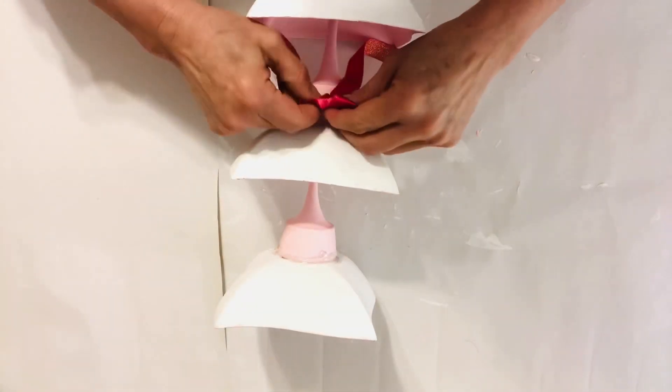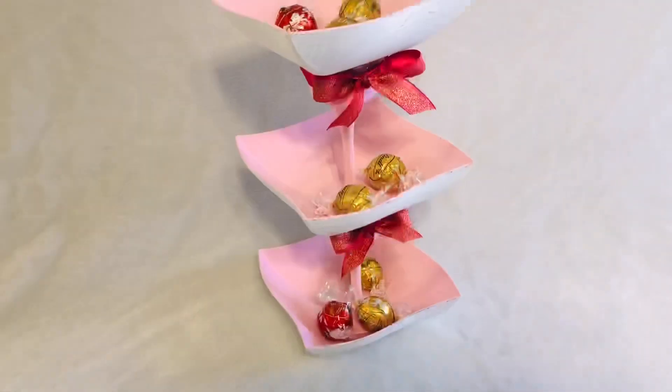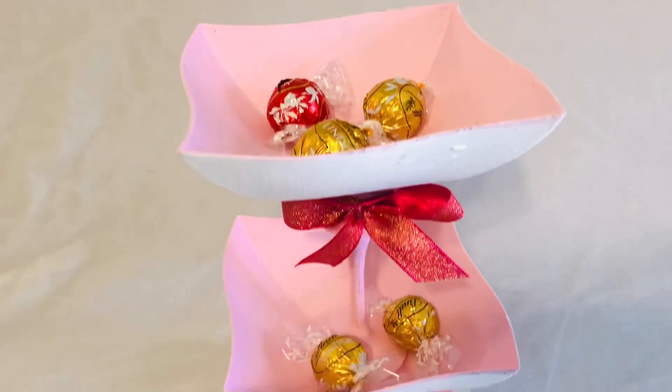Next I simply used hot glue and E3000 glue to glue those candlesticks in between the bowls. Now I wasn't real happy with the end result of that glue. It looked a little messy to me so to cover that up I tied some of these fuchsia ribbons from Dollar Tree at each column.